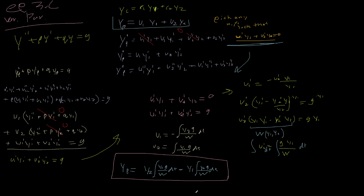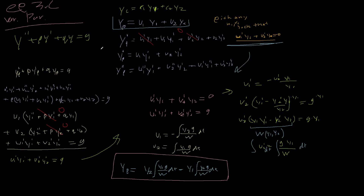This method is a bit more cumbersome, but it will work more often than the other method. Notice we didn't take p and q to be constants — we didn't make any assumptions about the coefficients. This allows us to solve more complicated equations that have non-constant coefficients. We'll look at some examples of that later. Thanks for watching.